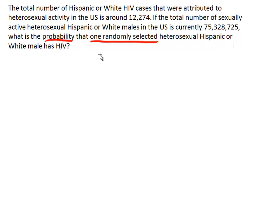I've underlined some important phrases in the problem. 'Probability' indicates it's a probability question, and we're just selecting one randomly selected heterosexual Hispanic or white male. The fact that we're only taking one means this problem involves either basic probability, the addition rule, or the conditional rule. The conditional rule has the phrase 'given that' with it, and we don't have anything like that here, so it's not the conditional rule.